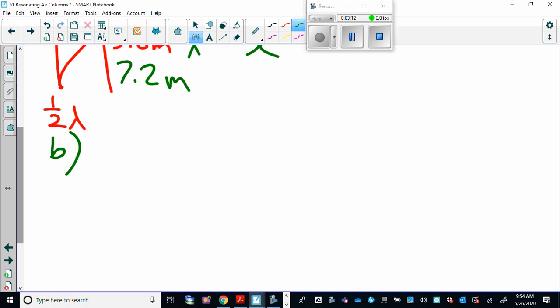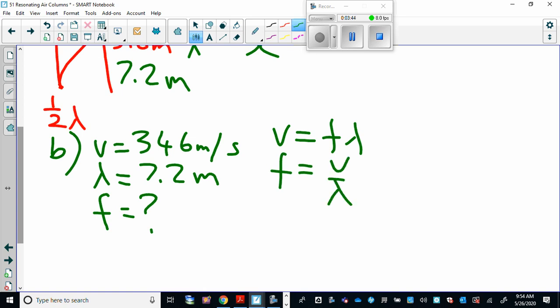So B says, what is the frequency of the note if the speed of sound is 346 meters per second? So we have the velocity of the sound. We now, from part A, have the wavelength of the sound. The question is asking for the frequency, and so we can just use the universal wave equation, and that gives us 48 Hz, cycles per second.